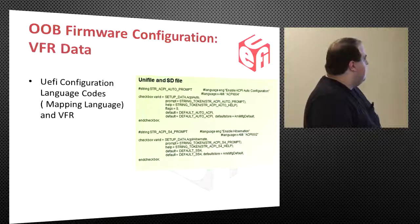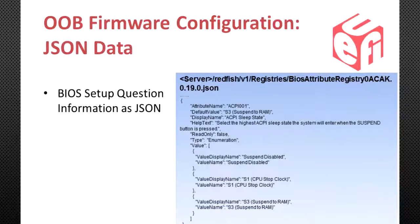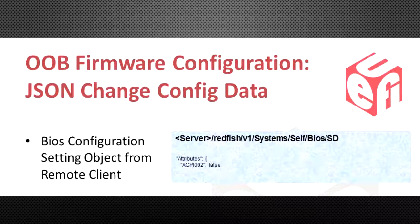Here we see the VFR with ACPI auto setup data, including ACPI hibernate in standard VFR language. When these questions are converted into JSON language, we can see the attribute name — ACPI 001 — a default value such as S3, and a display name: ACPI state. Taking this further into JSON config data, we see a BIOS configuration with ACPI 001, ACPI 002 true, ACPI 003 false, and ACPI 004 false. When making a configuration change, we only pass the piece we're changing — for example, setting ACPI 002 to false.